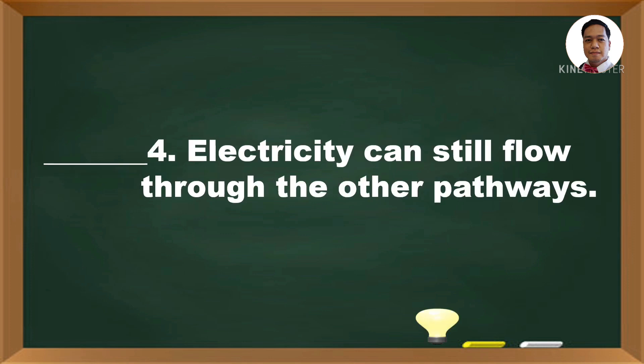Number 4. Electricity can still flow through the other pathways. Is it S or P? If you say P, you are correct.